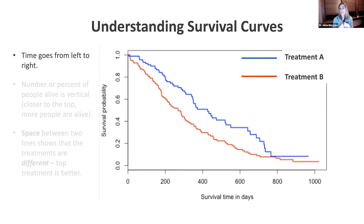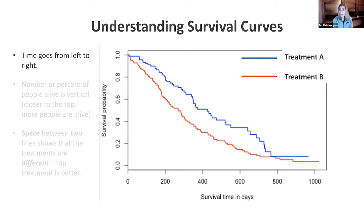Survival curves are essentially ways that we as doctors, scientists, and researchers think about how effective a treatment is. We usually have two treatments. In this case, in this survival curve, we've got treatment A and treatment B. We represent each treatment with a color — in this diagram, blue for treatment A and red for treatment B.